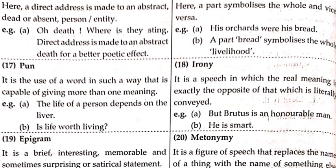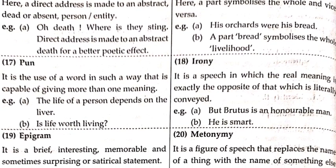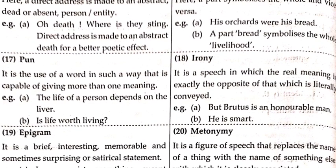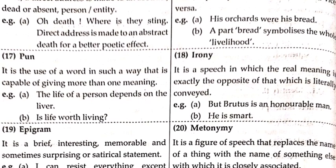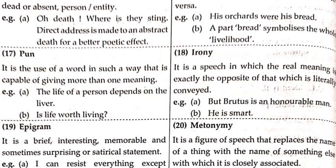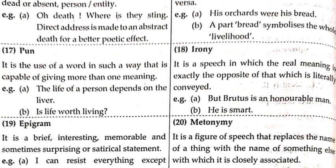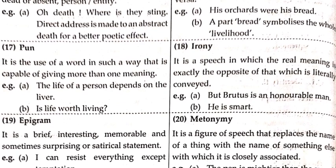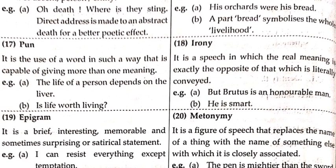What is synecdoche? Here, a part symbolizes the whole and vice versa. Example: 'His orchards were his bread.' Here, orchards and bread are two separate things but they are considered as a whole and vice versa. Bread symbolizes the whole and vice versa. In this manner, we have studied what synecdoche is.